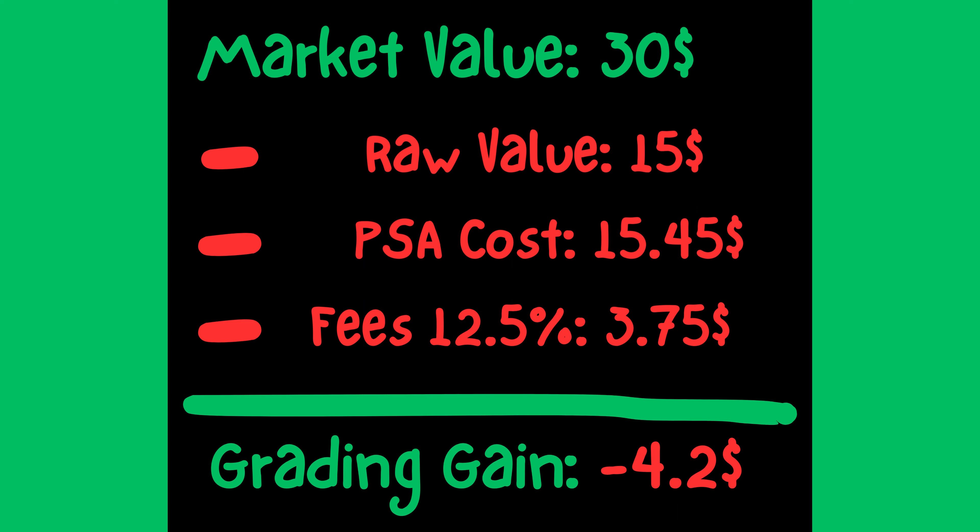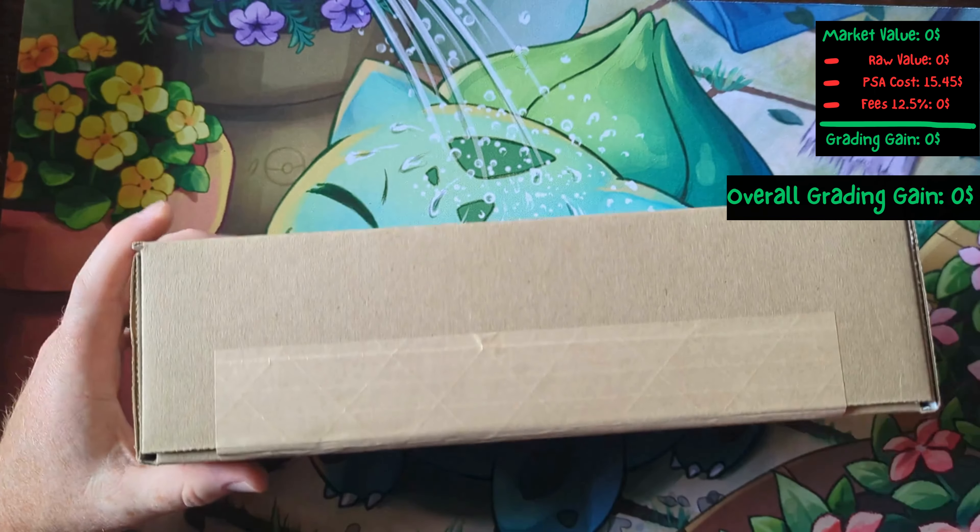Say you sold a PSA 10 card for $30, its raw value is $15, PSA cost is $15, and the fee would be close to three to four dollars — you'd actually be losing money. Even though you sold it for $30, you might as well have sold it raw because you would have made three more dollars in the end. So this calculation is important to look at, not just the PSA 10 value.